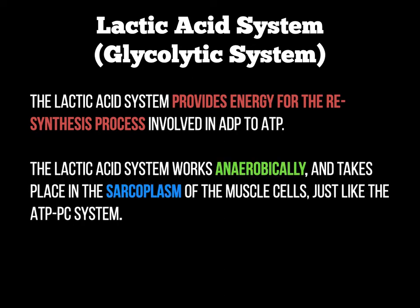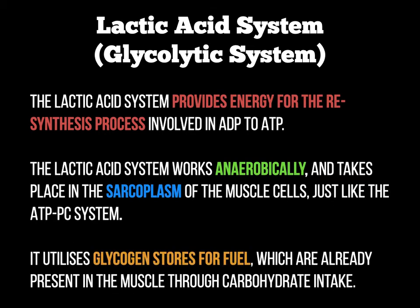The lactic acid system is the same as the ATP-PC system in that it works without oxygen, so it's an anaerobic system. It also takes place in the sarcoplasm of the muscle cells — imagine a piece of cling film wrapped around a muscle fibre; that is the sarcoplasm. However, this is where it differs from the ATP-PC system: it uses glycogen as its fuel store. We gain glycogen through food intake, particularly carbohydrates, and the body stores those carbohydrates as glycogen in the muscle, which is then used to create phosphates for ATP resynthesis.